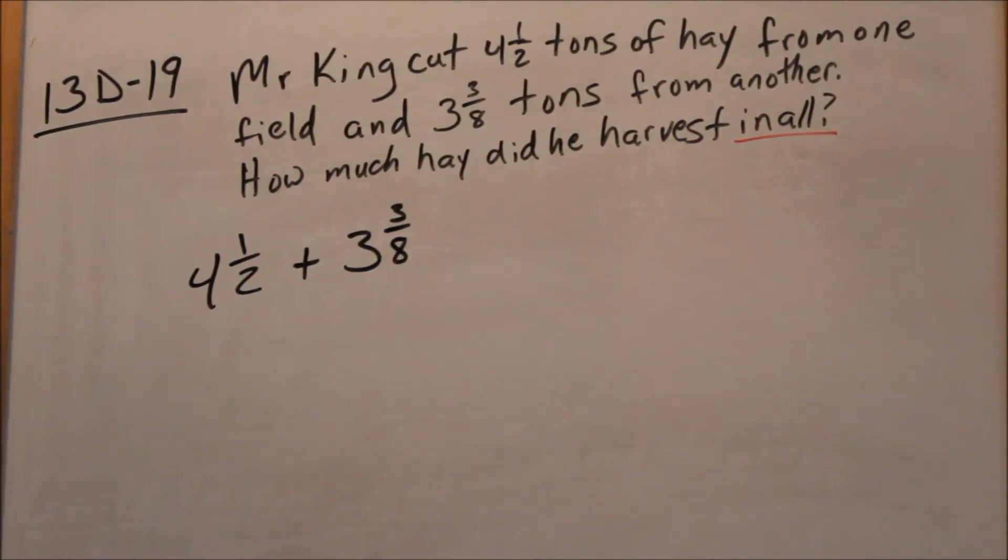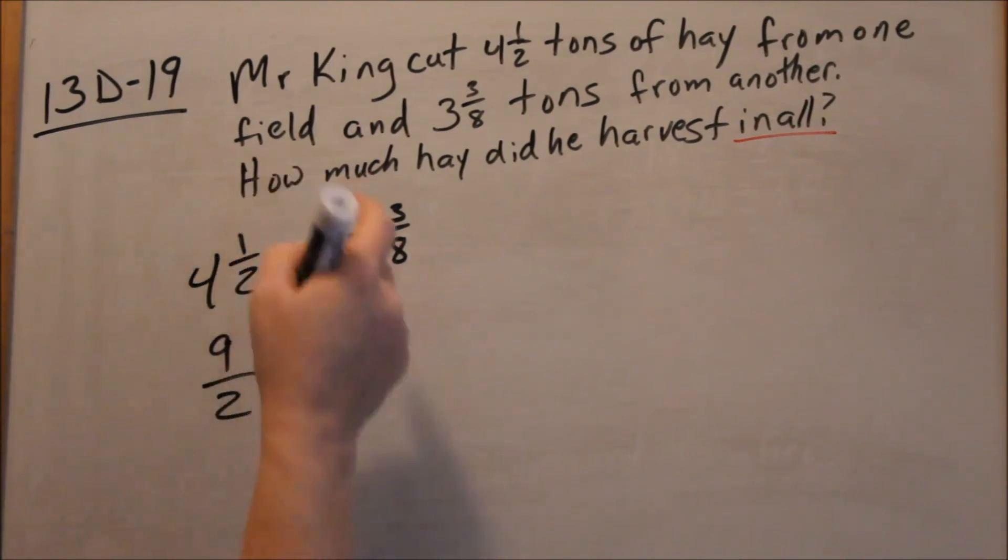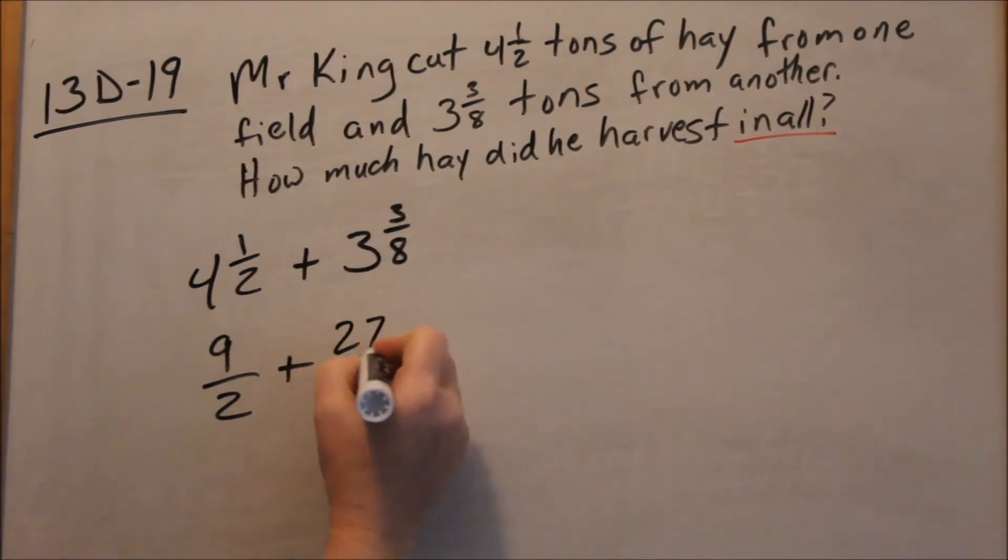I am going to work this as improper fractions because then I don't have to go through the extra step at the end of adding a whole number to a mixed number. So changing this to improper, 2 times 4 is 8, plus 1 is 9. That's the same thing as 9 over 2. Denominator always stays the same. 3 times 8 is 24, 24 plus 3 is 27 over 8.